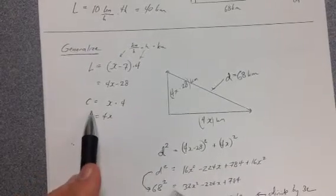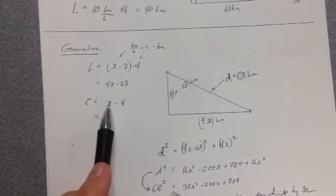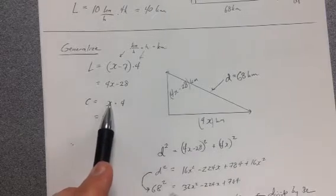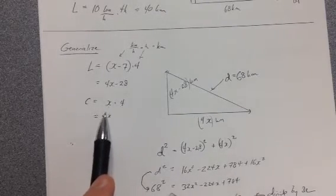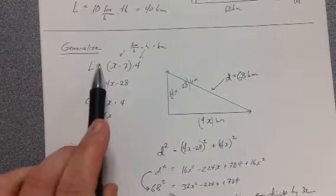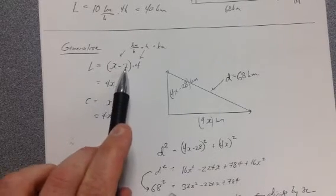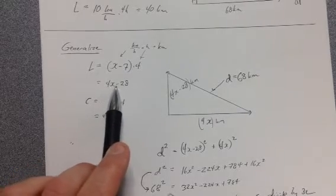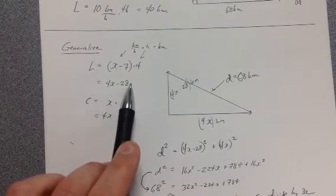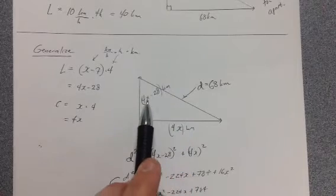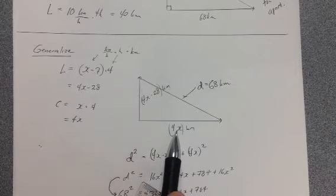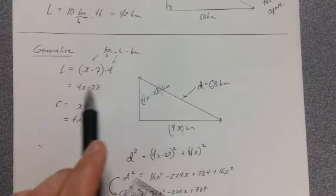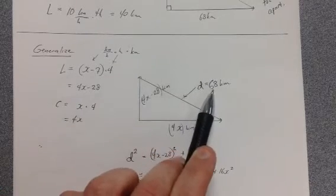We can interpret that Cassidy's speed is rate times time. X kilometers per hour times 4 hours gives us 4X kilometers per hour. Logan was going slower than Cassidy by 7 kilometers per hour times 4 hours is 4X minus 28 kilometers. So that's a representation of Logan's distance, that's a representation of Cassidy's distance. And we want their distance apart after 4 hours to be 68 kilometers.